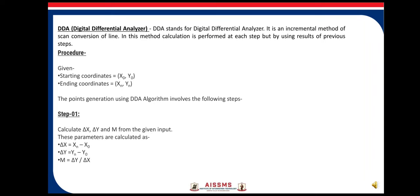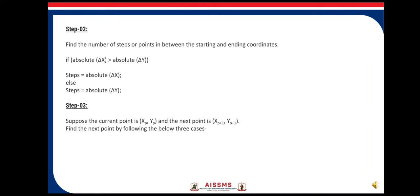Step 2: Find the number of steps or points in between the starting and ending coordinates. If absolute delta x is greater than absolute delta y, then steps equals absolute delta x. Otherwise, steps equals absolute delta y.